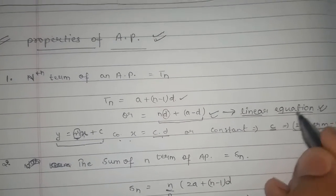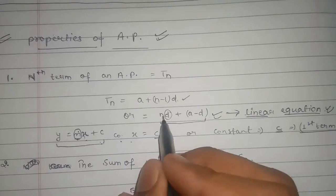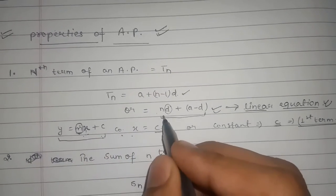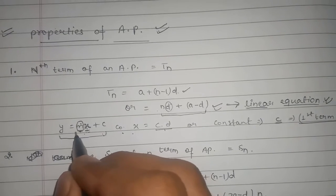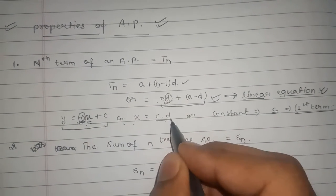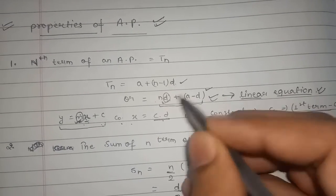We also know that linear equation is in form of y = mx + c. By comparing both equations, this one and this one, we conclude that the coefficient of x, that is m, is equal to common difference. It is a form of equation in n.